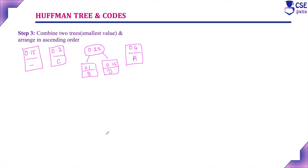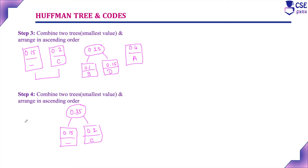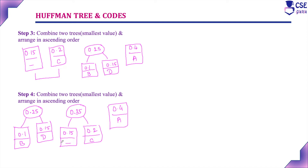In step 4, combine the next two smallest nodes: underscore (0.15) and C (0.2), placing the sum 0.35 at the root, with underscore as the left child and C as the right child. After combining, rearrange in ascending order: 0.25 (B and D), then 0.35, then 0.4 (A). Now we have three nodes remaining.